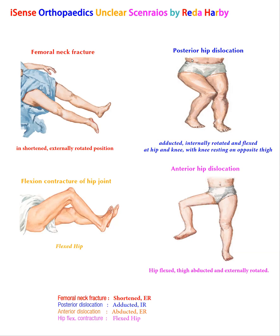The second scenario is posterior hip dislocation. The affected limb will be adducted, internally rotated, and flexed at both joints — flexed at the hip and flexed at the knee — with the knee resting on the opposite normal thigh.